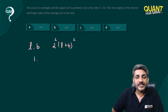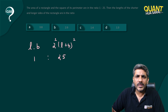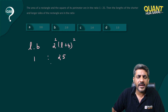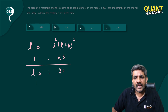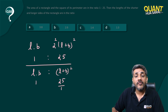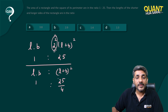The square of the perimeter is 2 squared into (l plus b) squared. They are in a ratio of 1 is to 25. If I divide by 4, I can say that l into b is 1, and (l plus b) squared is 25 by 4.